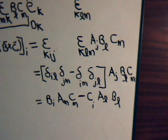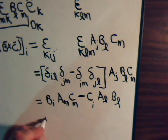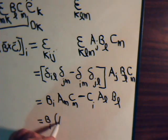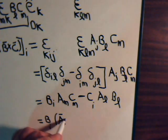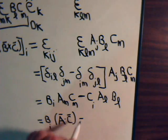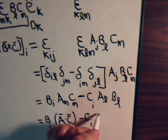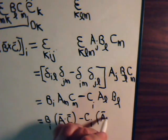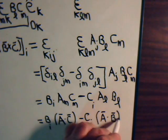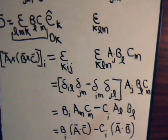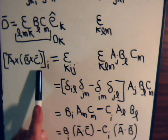Now, A_M, C_M, that's component form for A dot C. So, this equals B_I, A dot C minus C_I, A_L, B_L. Now, that's component form for A dot B. And what is this equal to? That is equal to the ith component of this triple cross product.